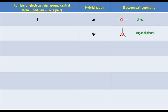If there are four electron pairs around the central atom, to find out the hybridization, just write s, p. Put one on s and put the remaining three electron pairs on p. So the hybridization will become sp3. The electron pair geometry will be tetrahedral.